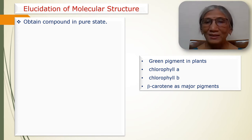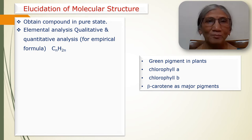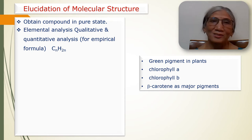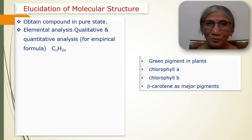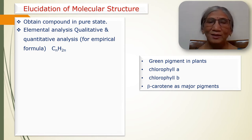Nowadays, chromatographic techniques are used for the separation. After separation, the compound is purified and crystallized. Once we get the purified crystalline compound, it is subjected to elemental analysis, which is of two types: qualitative elemental analysis — which tells us what elements are present — and quantitative elemental analysis — which tells us in what ratio these elements are present. For example, for a hydrocarbon consisting of only carbon and hydrogen, with the ratio CₙH₂ₙ, the empirical formula might come out to be C₇H₁₄.